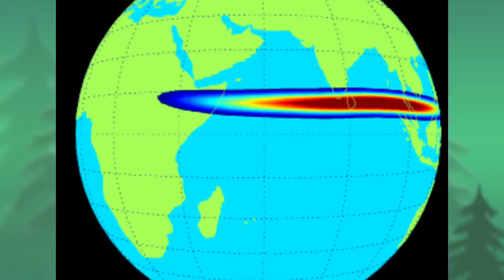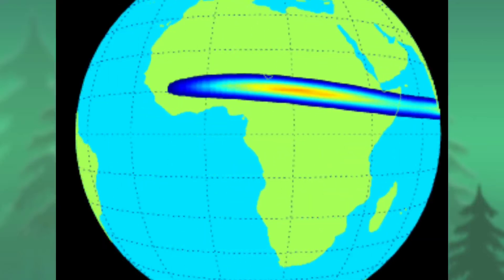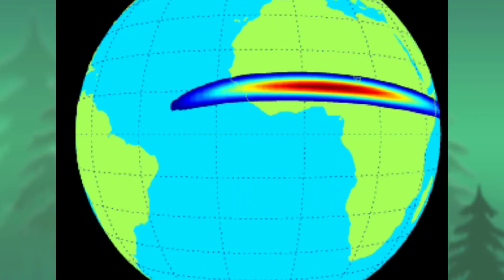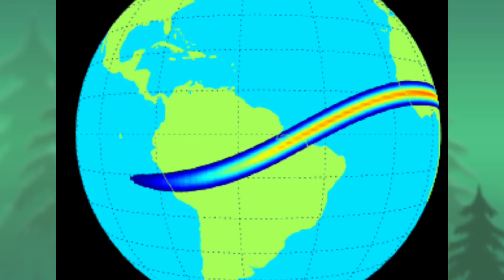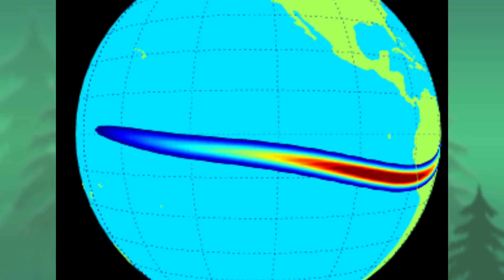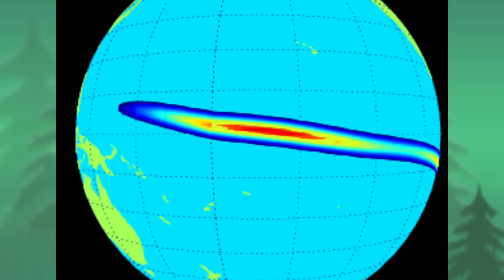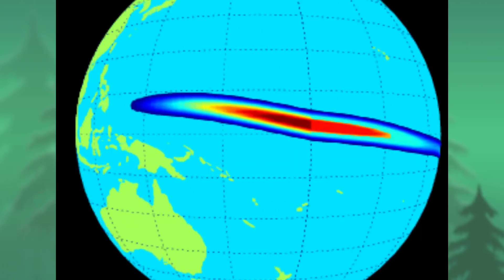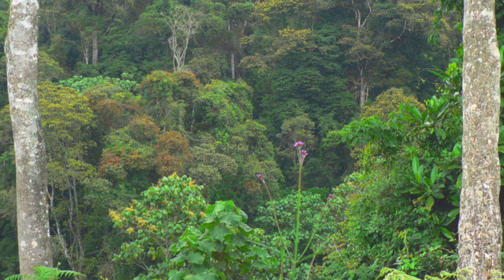Let us see which areas come under the equatorial region. These areas are the Amazon River Basin of South America, the Congo River Basin of Africa, the Guinea coast of West Africa, the Malaysian Peninsula, and the Indonesian and Philippine Islands of Southeast Asia.